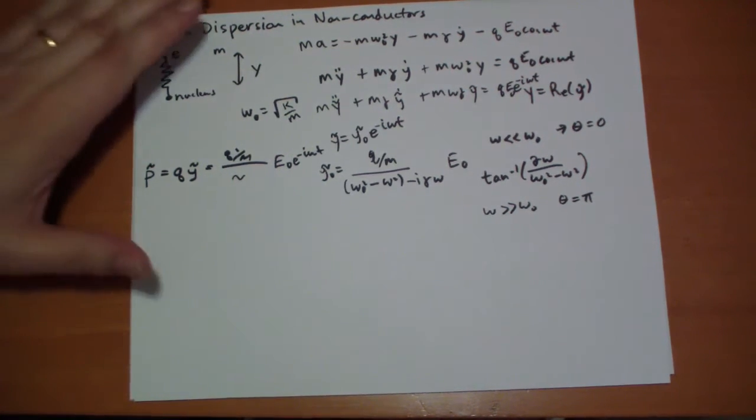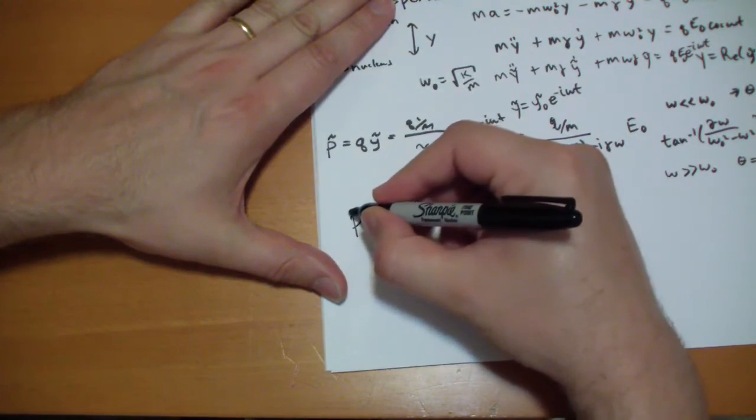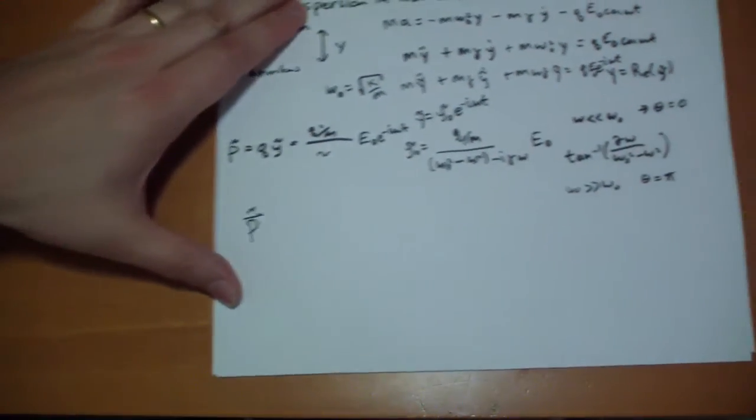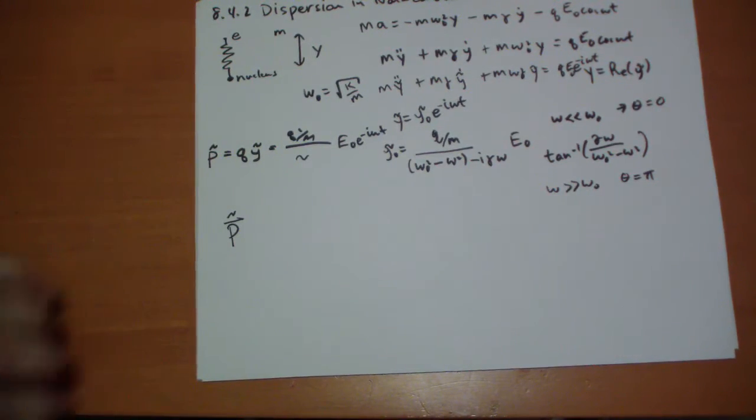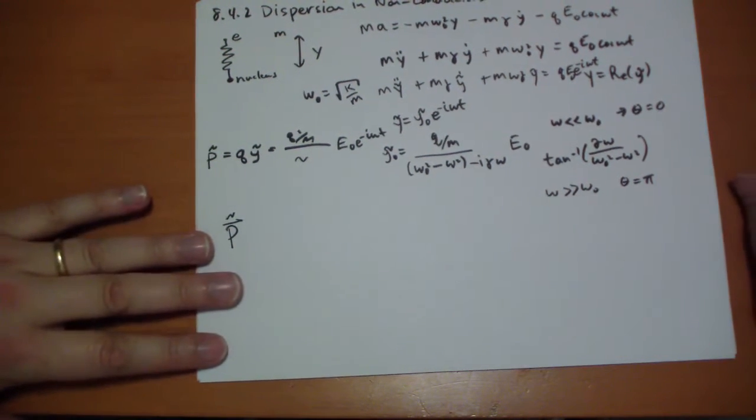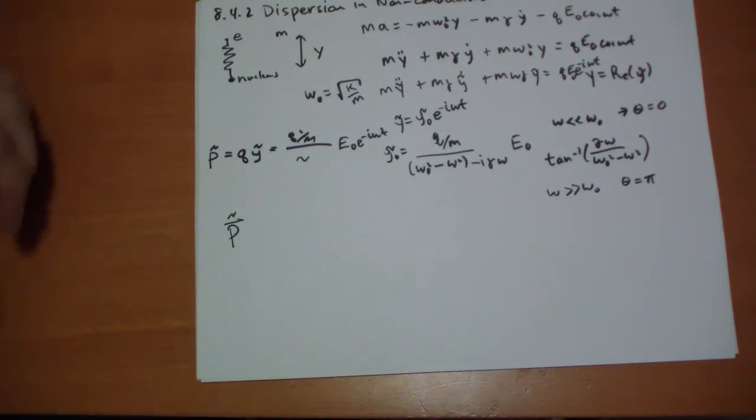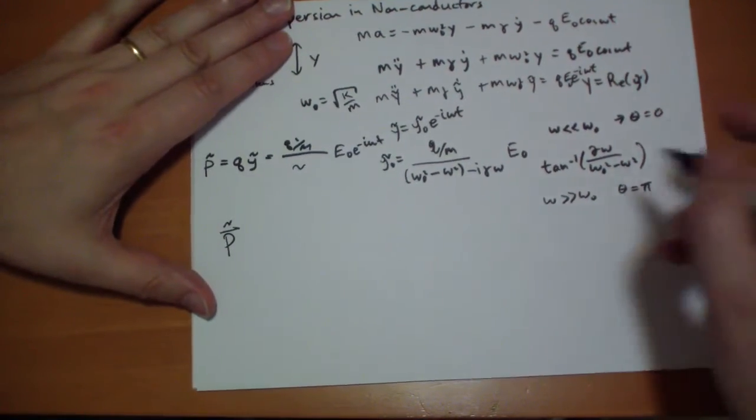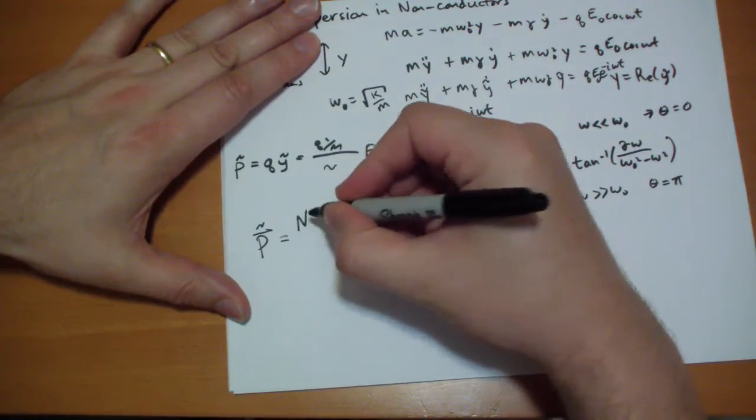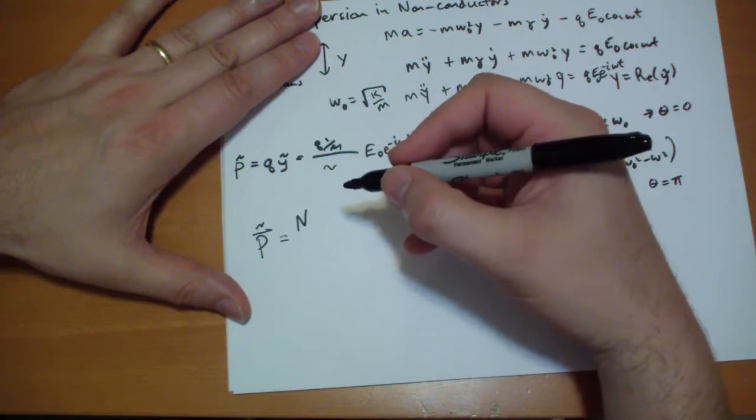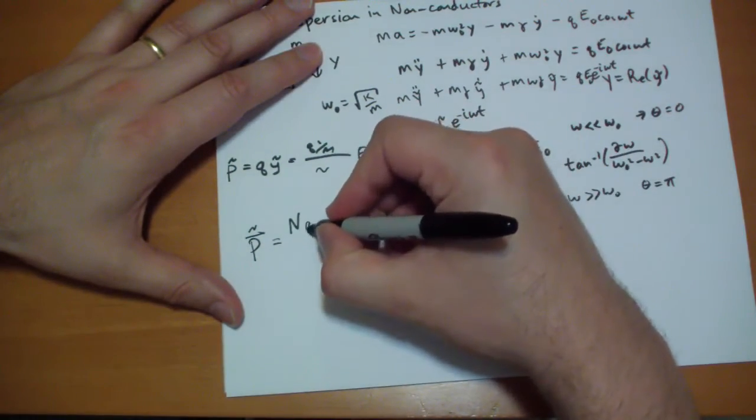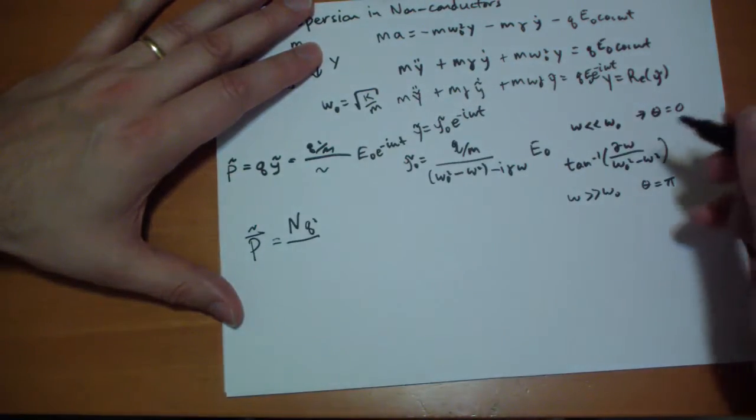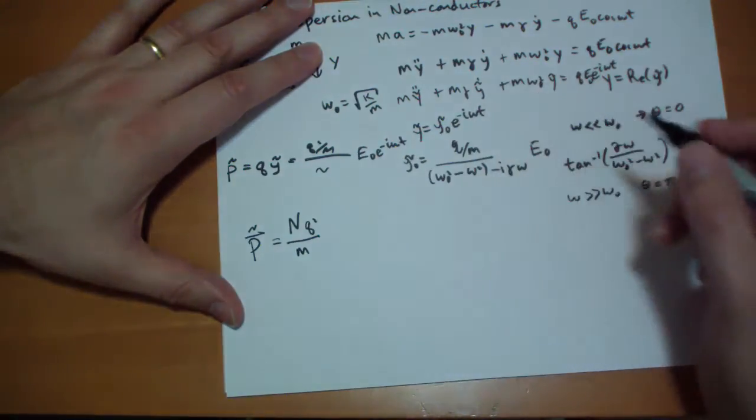So we can represent that by pretending there's multiple electrons connected to a nucleus with various springs and various damping constants gamma. So we can represent the polarization of a material. Polarization of material is different than the polarization of the wave. The polarization of the wave tells you which direction the E field is pointing. The polarization of the material says this is the induced E field within the material caused by the external E field. So we get that's equal to the number of molecules, q squared, that's the charge of the electron squared divided by the mass of the electron.